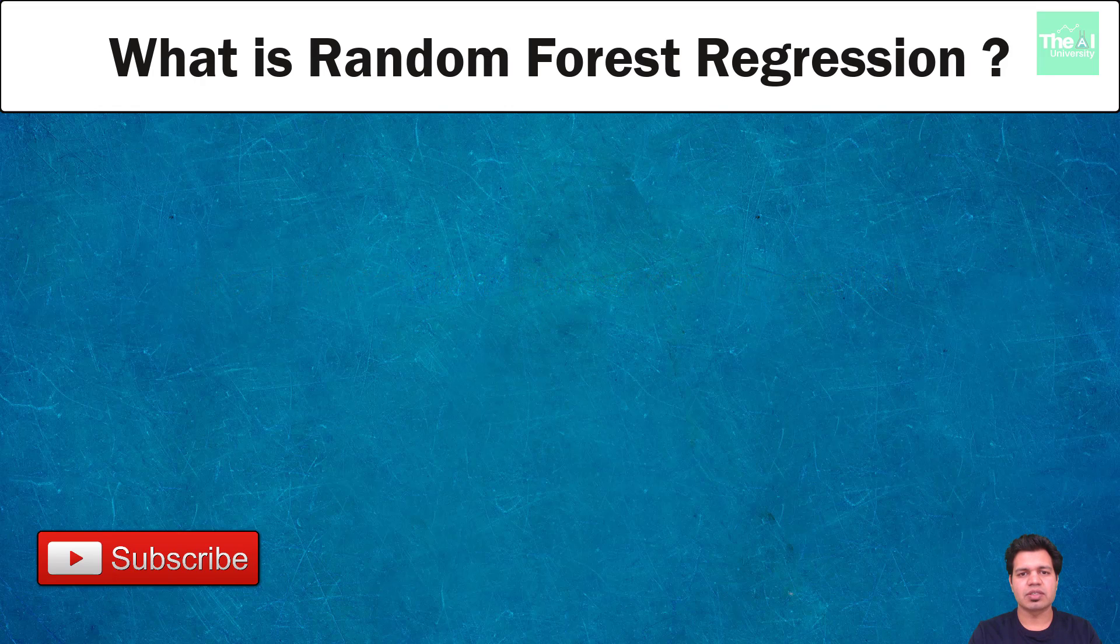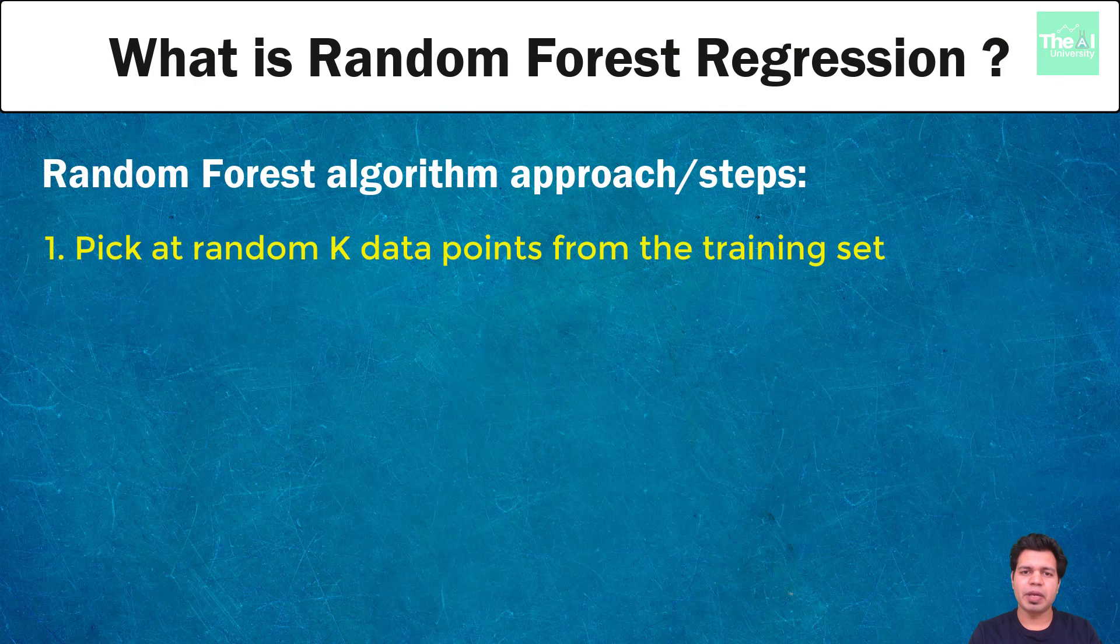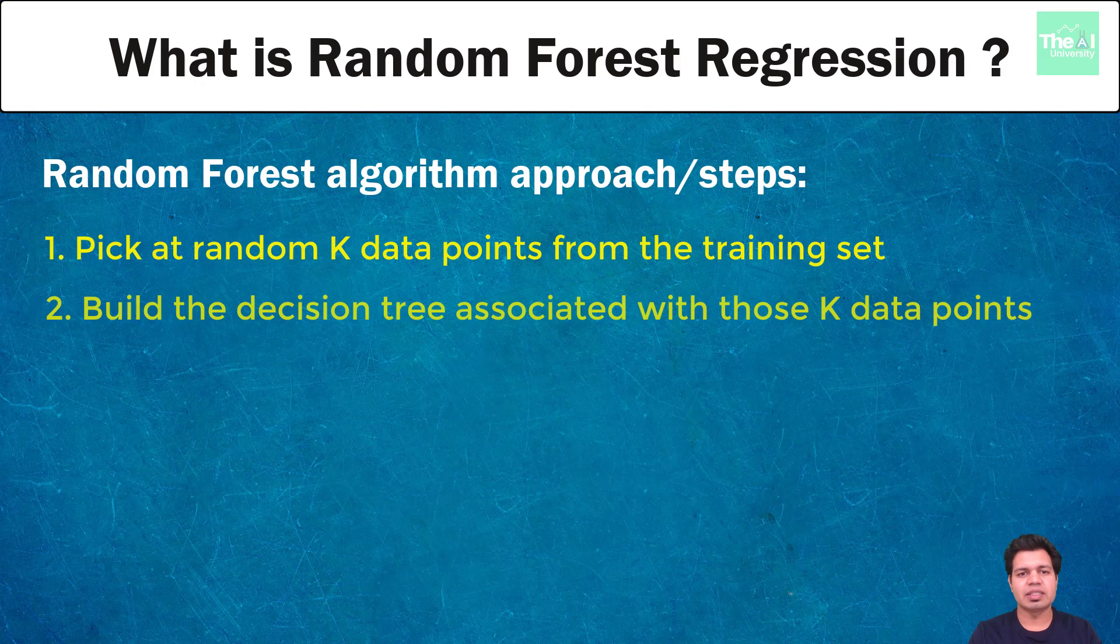So let's go ahead and see the approach the algorithm takes to build a random forest. Number one step is pick at random K data points from the training set. So here we are utilizing the whole dataset and then we are picking a subset or K data points from it. Number two step is build the decision tree associated with those K data points. So as a part of this step you are building the decision tree with those subset of observations or K data points.